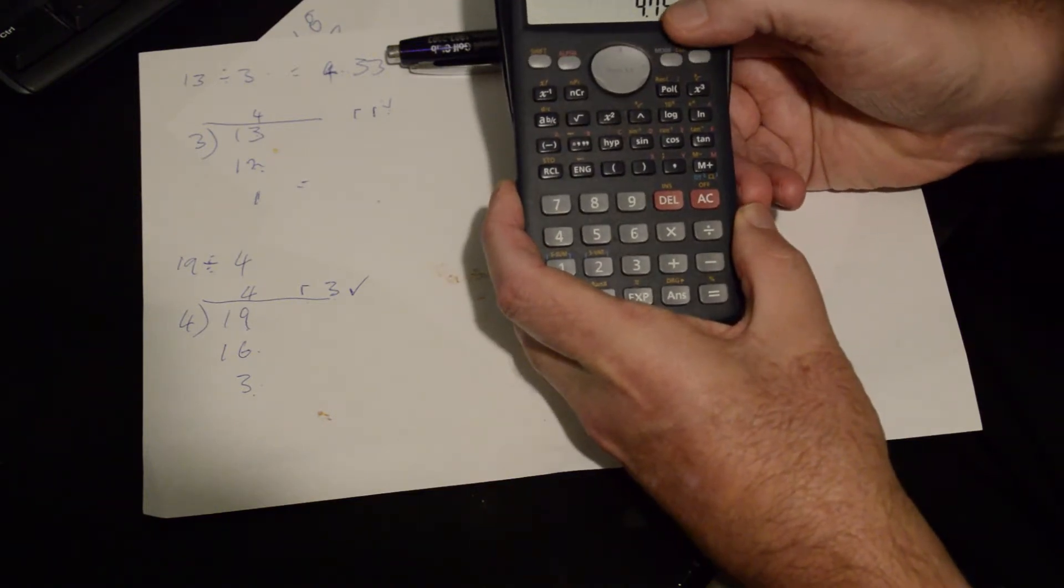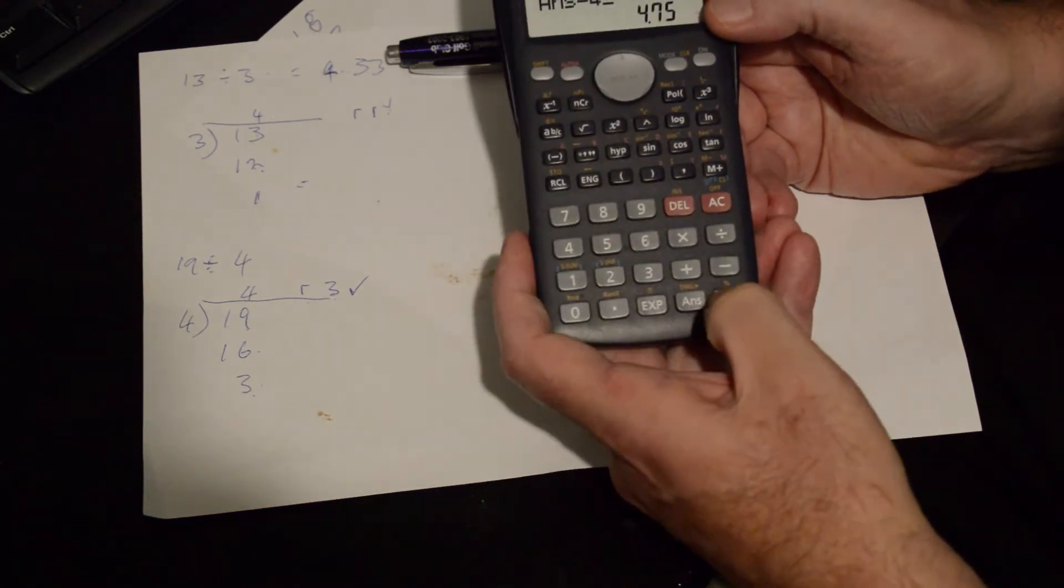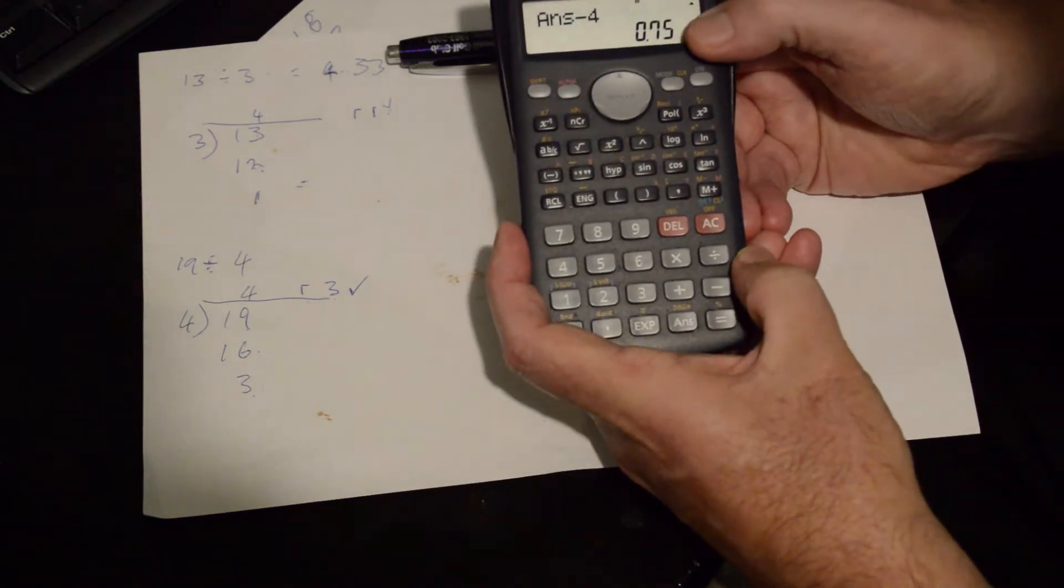So we need to get rid of the 4 on that side. So we need to go answer minus 4 equals. So now we've got 0.75.